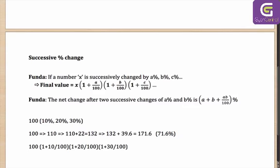Which, if you notice carefully, is nothing else but 100 × 1.1 × 1.2 × 1.3. If you multiply 1.1 × 1.2 × 1.3 × 100, you get the same value as above — 171.6. From 100 you are getting to 171.6, meaning your change was 71.6%.